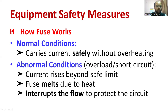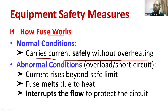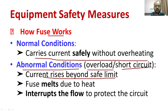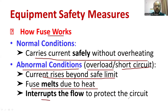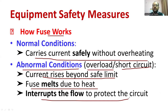Let us understand the working of fuse. Under normal conditions, it carries the safe current without any overheating. During abnormal conditions — overload or short circuit — current rises beyond the safe limit. At that time, heat is generated. The fuse starts melting and interrupts the connection between the two contacts. Current flow is interrupted, and the entire circuit is shut down — there is no power, and there is isolation between the supply and the load.